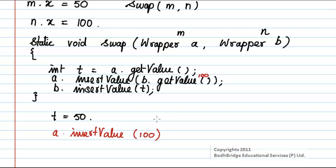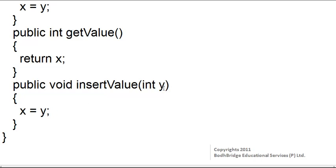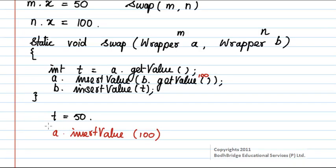In the insertValue method, the value passed in the argument y is assigned to x. Here the object referred to is m, so for object m the value of x is now assigned 100 — that is m.x equals 100. The next statement is b.insertValue(t). The insertValue method assigns t to x for object n, so n.x will now contain the value of t, which is 50.